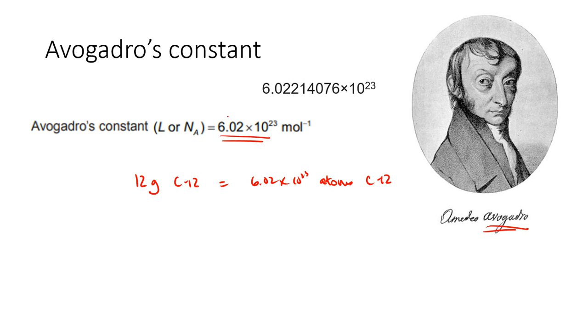Interestingly, there's quite a few more than these sig figs, so it goes on for quite some time. Luckily for IB, we just have to know 6.02 times 10 to the 23rd.